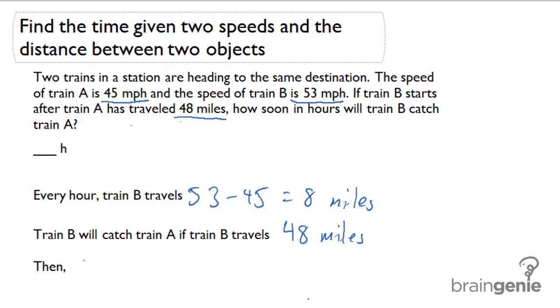At that rate, we know that 48 divided by 8 is going to give us 6 hours. So at these speeds and the initial distance between them, it's going to take 6 hours for train B to catch train A.